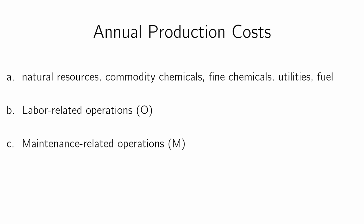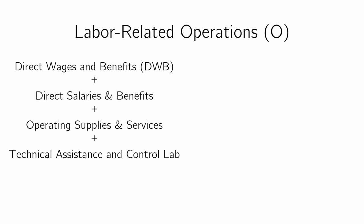Let's look at O and M specifically, because those are things we will deal with specifically and quote as we're dealing with things in the plant design later on. The labor-related operations, or O, will be equal to four factors summed up together: direct wages and benefits (DWB), direct salaries and benefits, operating supplies and services, and technical assistance and control lab.